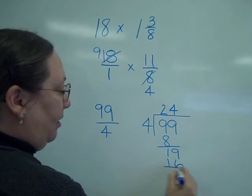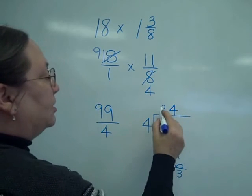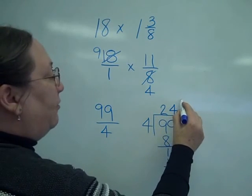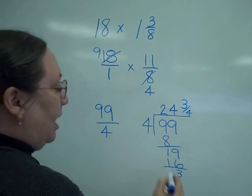4 goes into 19 4 times. 4 times 4 is 16, 3 left over. So, my answer is 24 and 3 fourths.